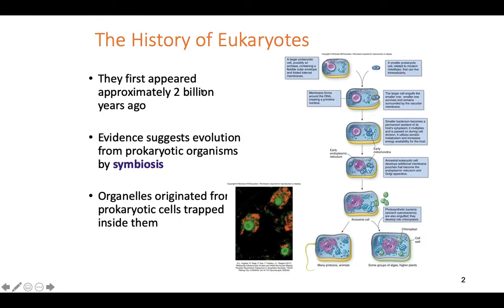The very first eukaryotic fossils appear on earth around 2.7 billion years ago, and they're very simplistic fossils. Evidence suggests that primitive eukaryotes arose through a process of symbiosis through something called the endosymbiotic theory. You can see here a very large prokaryote that has some simple cell structures inside of it, not anything very fancy.